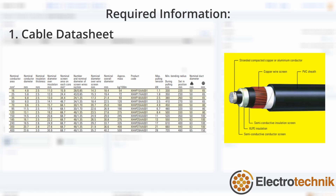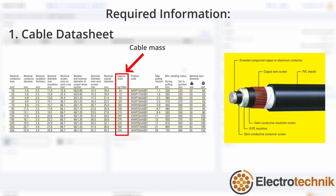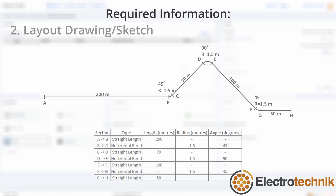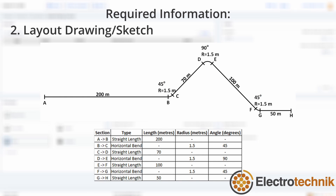To perform a cable pulling calculation, you will need a manufacturer datasheet for the cable, which includes the overall diameter of the cable, weight of the cable, and maximum allowable pulling tension. You also need a layout drawing or sketch of the pull, which is ideally broken down into sections such as straight lengths, bends, rises, and falls. The sections of the diagram on screen are displayed in the table below.